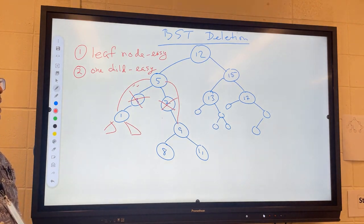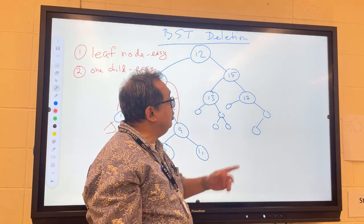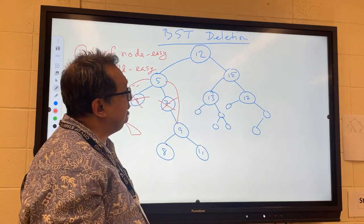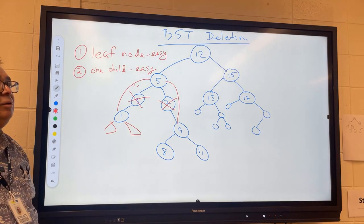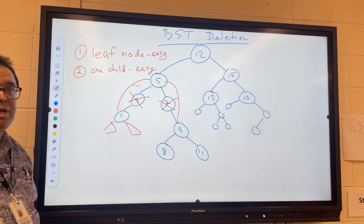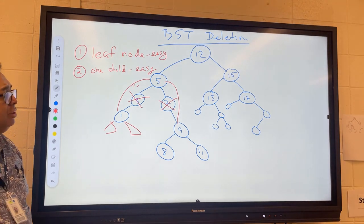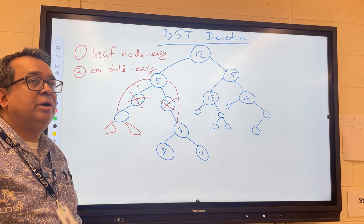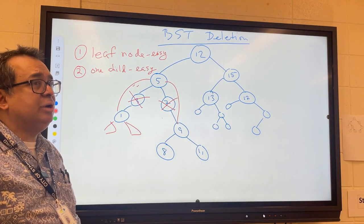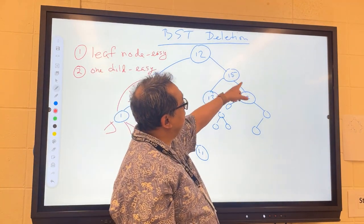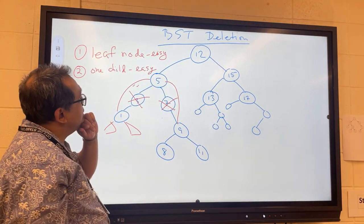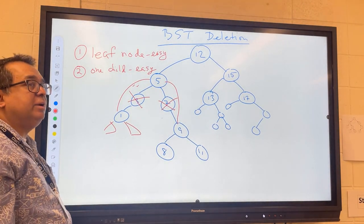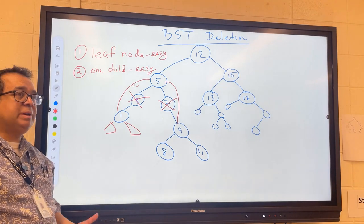Now I think you can understand that if the node has two children, it's not so easy. Like for example, if I was going to delete the 15, what would that look like? Can you see that that's much more challenging? So I would like you to give a little bit of thought to this problem and discuss with your partner. Is there some way we could do something to the tree when the 15 has to be deleted so that we could convert that case into one of these cases? See if you can figure it out.